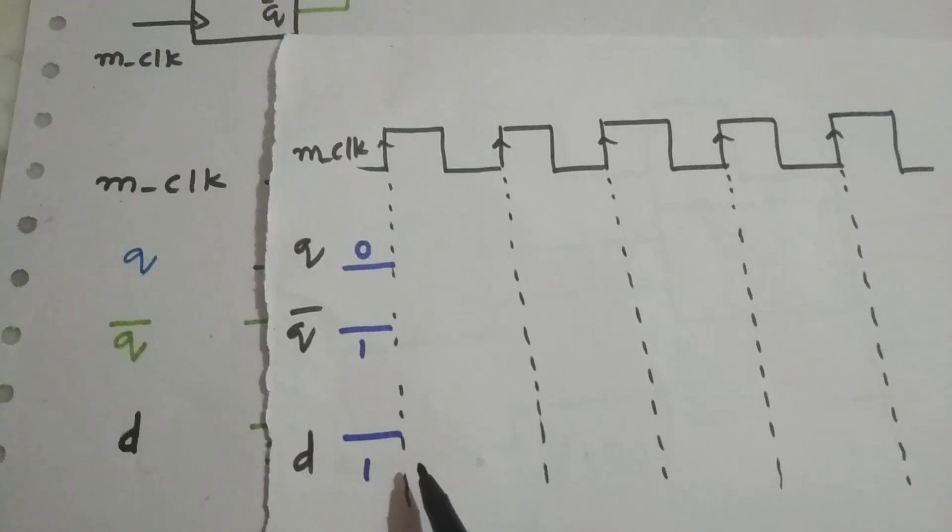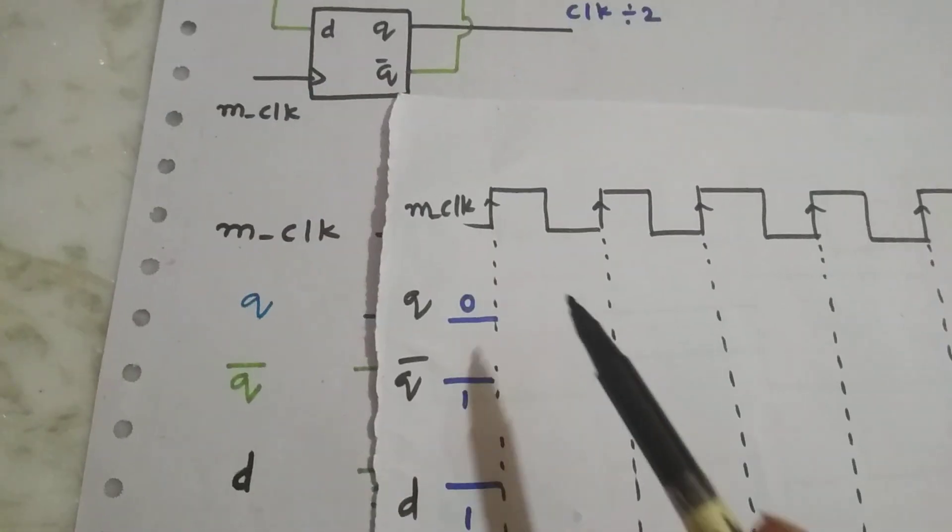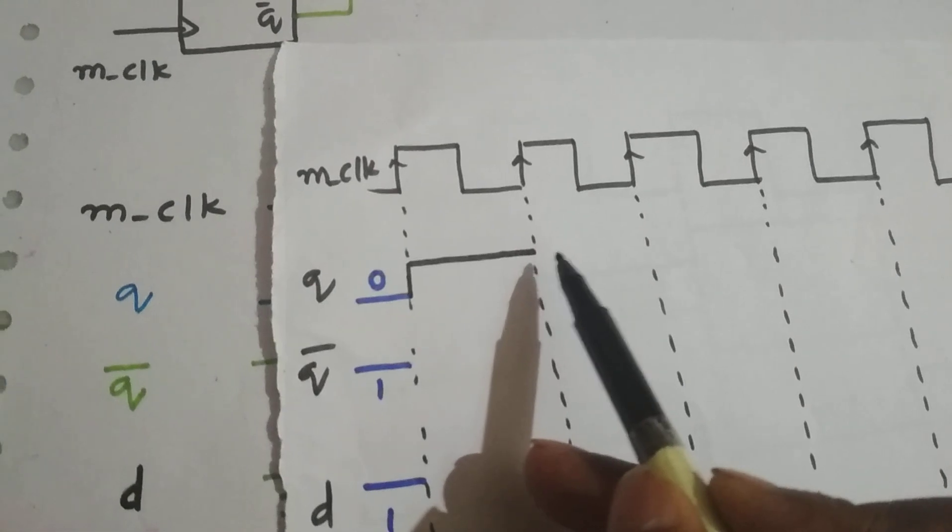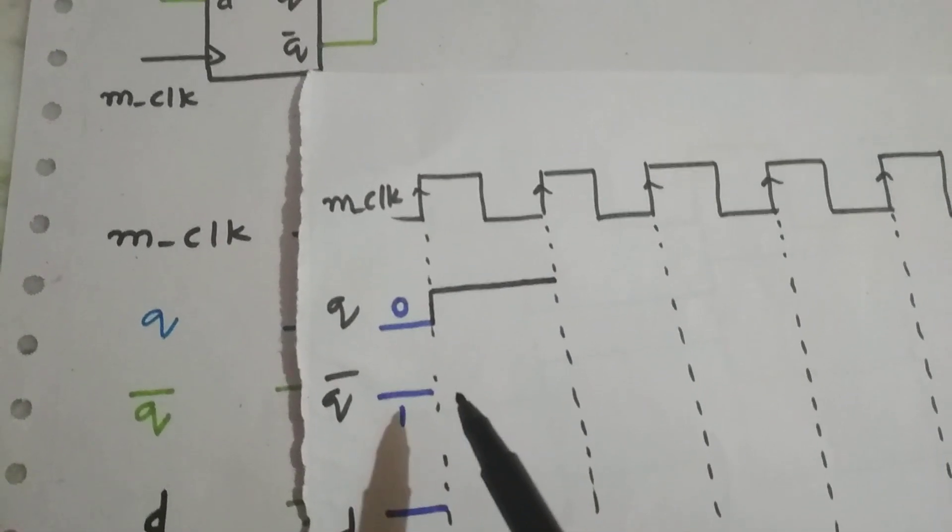As you can see, the D value is 1, so which is given to Q. So Q will be 1. So Q is 1 over here.